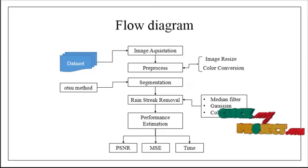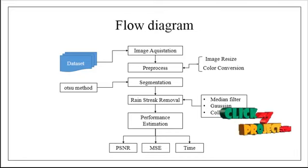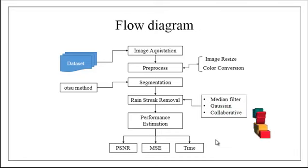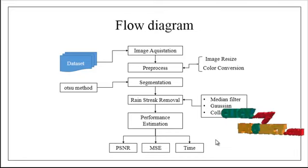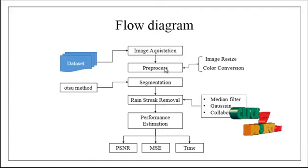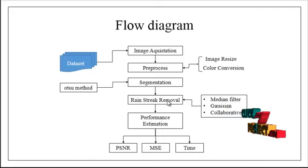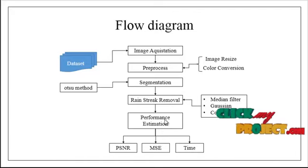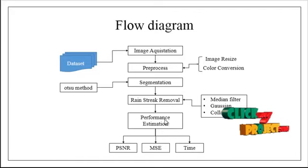Now we are going to discuss the overall working flow of this process. This process has the following modules: image acquisition, preprocessing, segmentation, rain streak removal, and finally performance estimation.